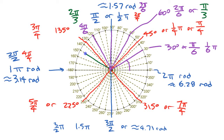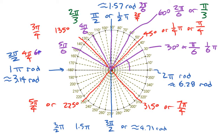Continuing: 150 degrees is 5 pi over 6. Then 180 degrees is 6 pi over 6 — we already know that's just pi. So counting by 30 degrees: 30, 60, 90, 120, 150, 180 — all expressed as multiples of pi over 6.